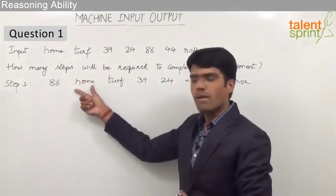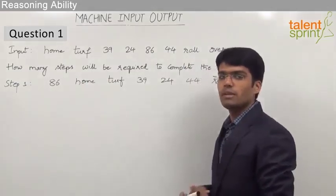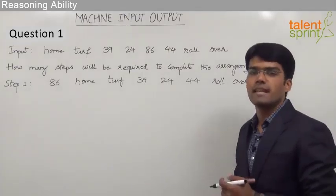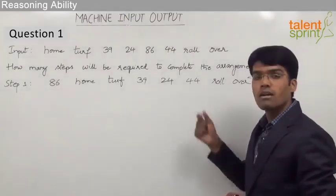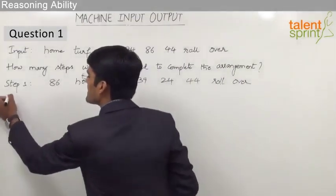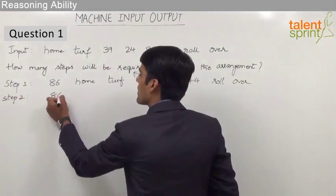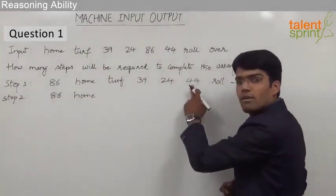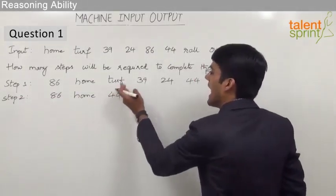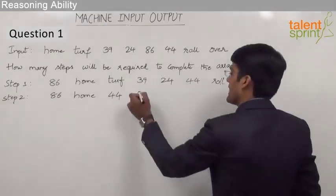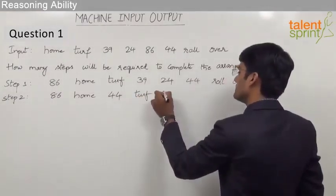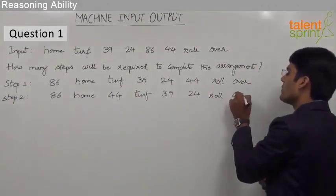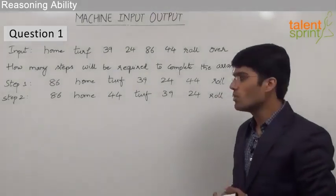The third position should be a number among 39, 24, and 44. Following descending order, the third position should be taken by 44. In step 2, since the first two positions (86 and home) are already fixed, we bring 44 to the third place and push the remaining elements aside. The arrangement becomes: 86, home, 44, turf, 39, 24, roll, over.